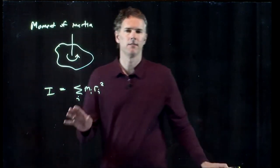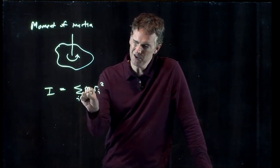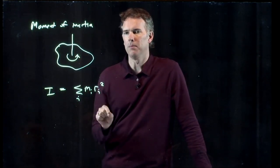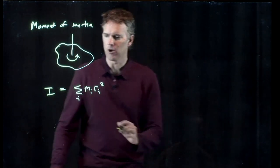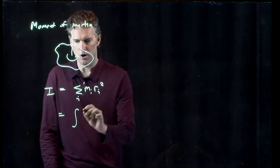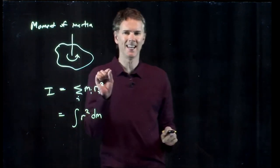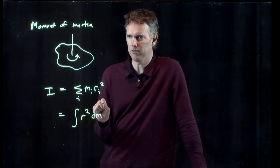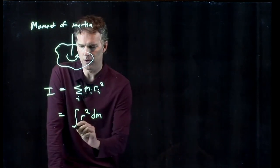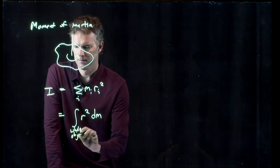So whenever you have a summation, if you just reduce the size of your m to infinitesimal, it becomes an integral. Okay? And that's all we have to do here. The summation becomes an integral. The r squared hangs out. The m becomes an infinitesimal piece of mass, which is what we call dm. And then you integrate this over the whole object.